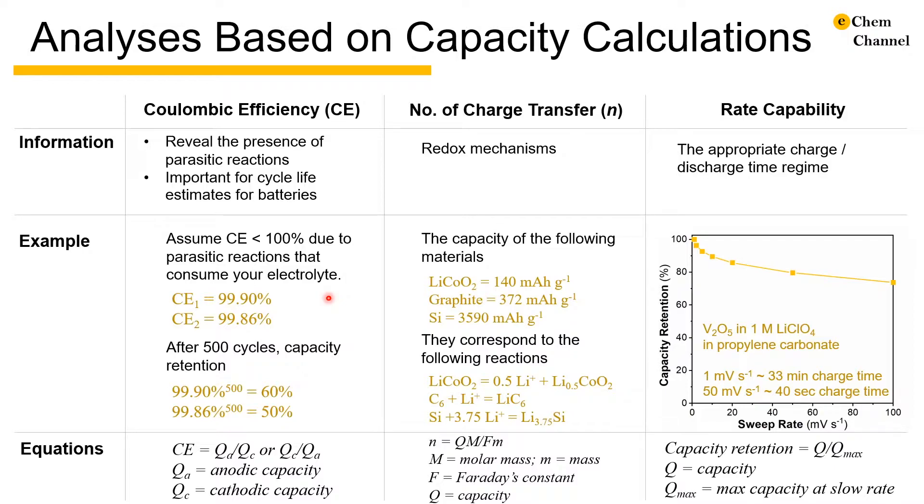The calculation of coulombic efficiency of a single electrode depends on the process that we are looking at. For graphite, we need to intercalate or reduce it first and then to deintercalate or oxidize it. In this case, we take anodic capacity and divide it by the cathodic capacity.